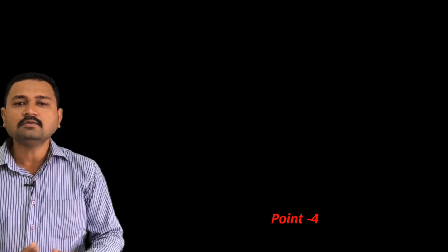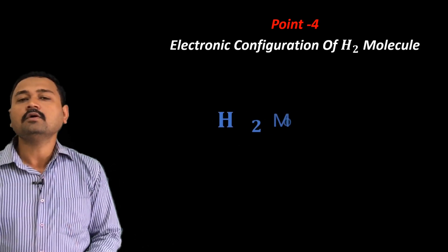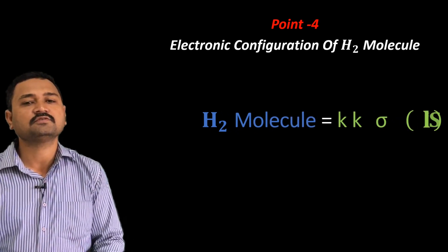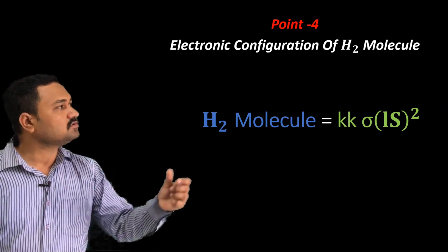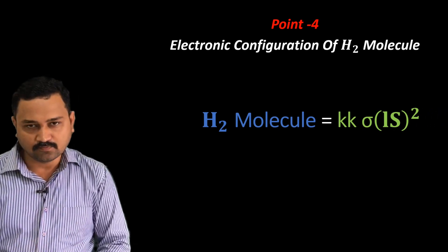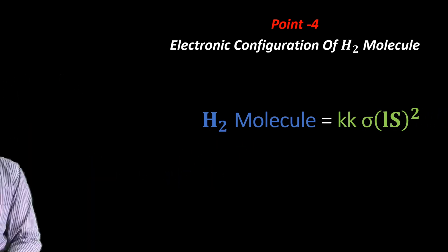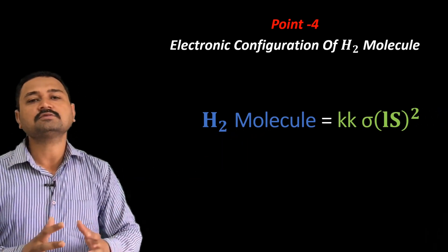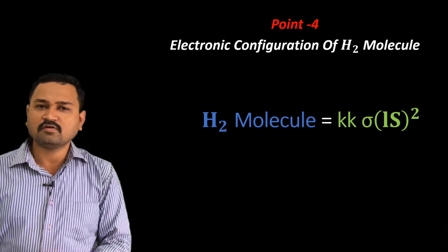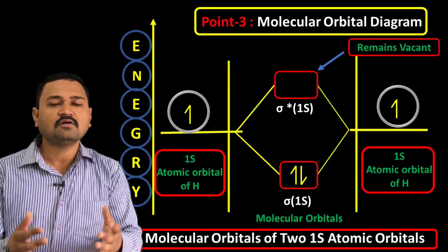Next, point number four: the electronic configuration of hydrogen molecule. Just as we write the electronic configuration for an atom, here we write it for the hydrogen molecule. The electronic configuration of hydrogen molecule equals KK into sigma 1s². There are two electrons in the bonding molecular orbital. The electronic configuration is written with KK as a constant and the energy levels in which the electrons are distributed.